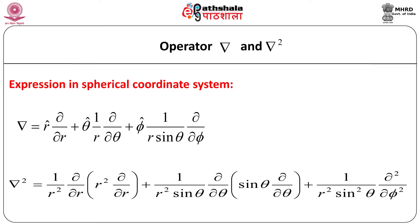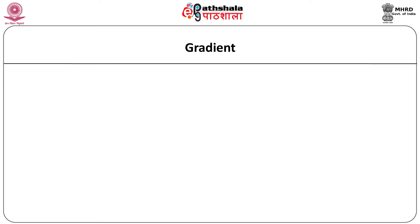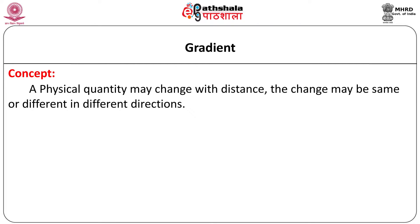Now let us try to understand the three concepts — namely gradient, divergence, and curl — the mathematical way of their computations, their applications, and some numerical examples. First of all, let us discuss about gradient. We observe many physical quantities changing with coordinates. A physical quantity may undergo a change with distance; the changes may be the same or different in different directions. In such a case, we talk about the gradient of that physical quantity.